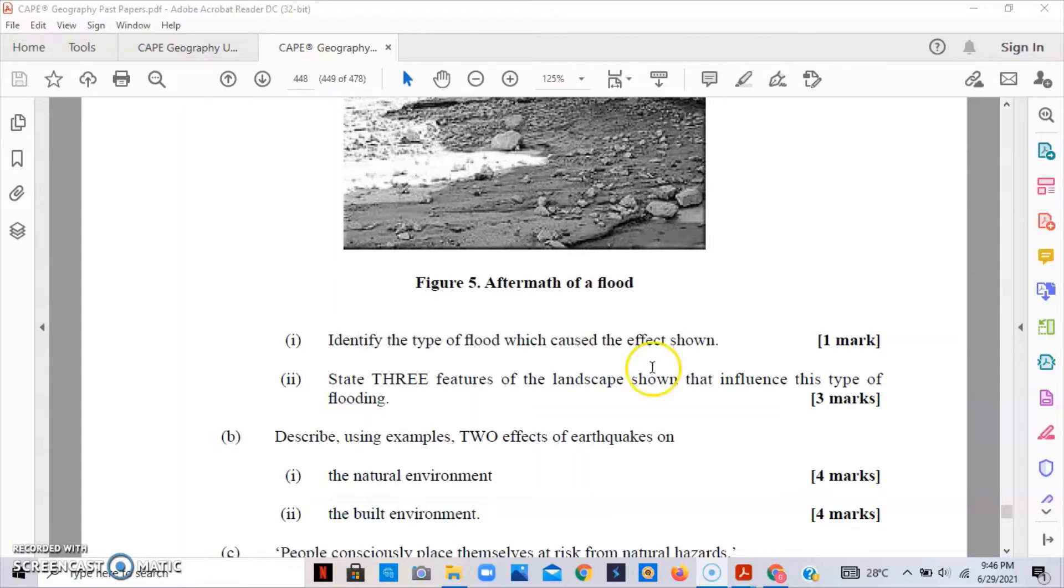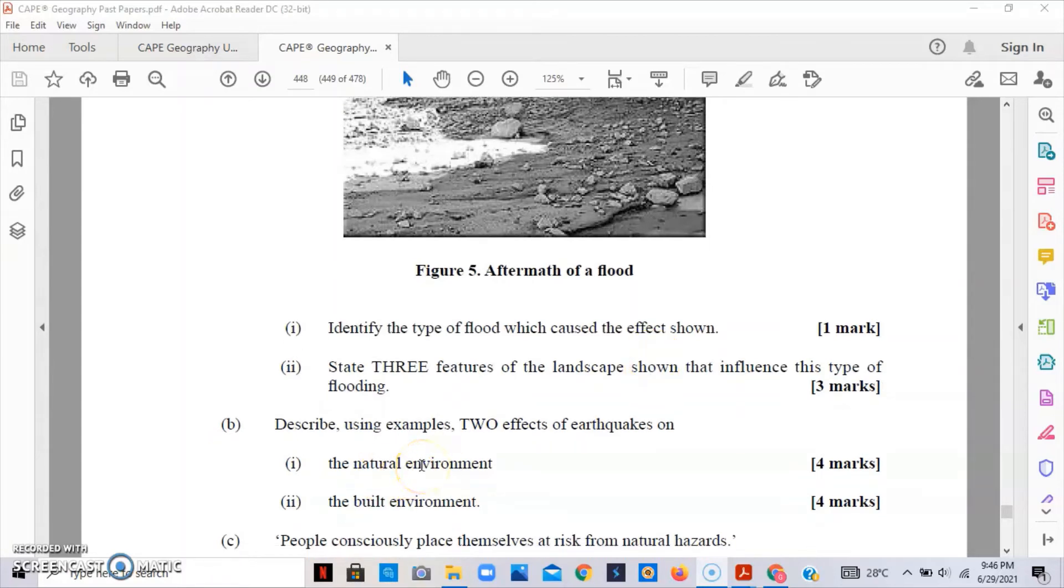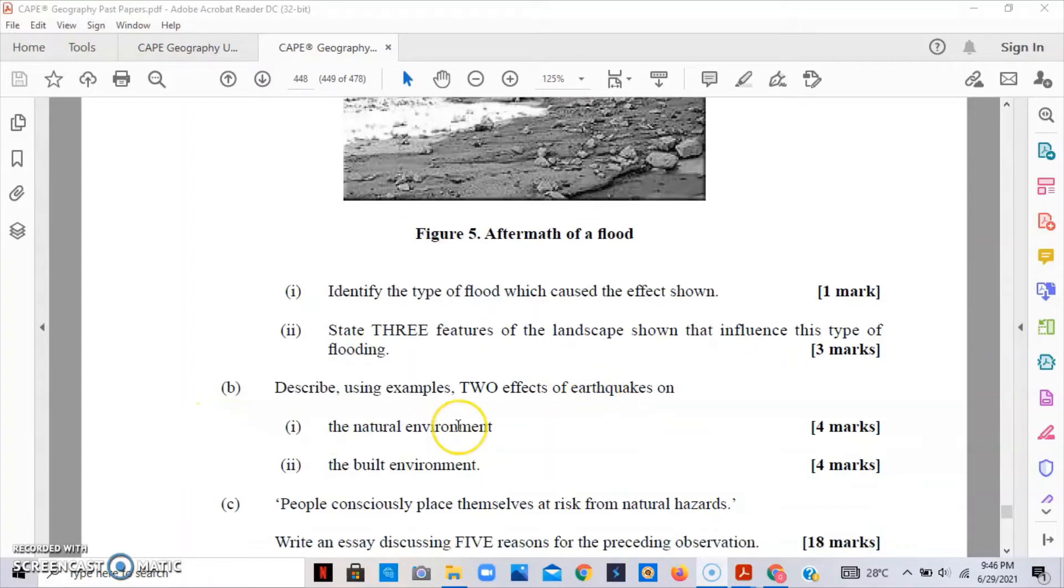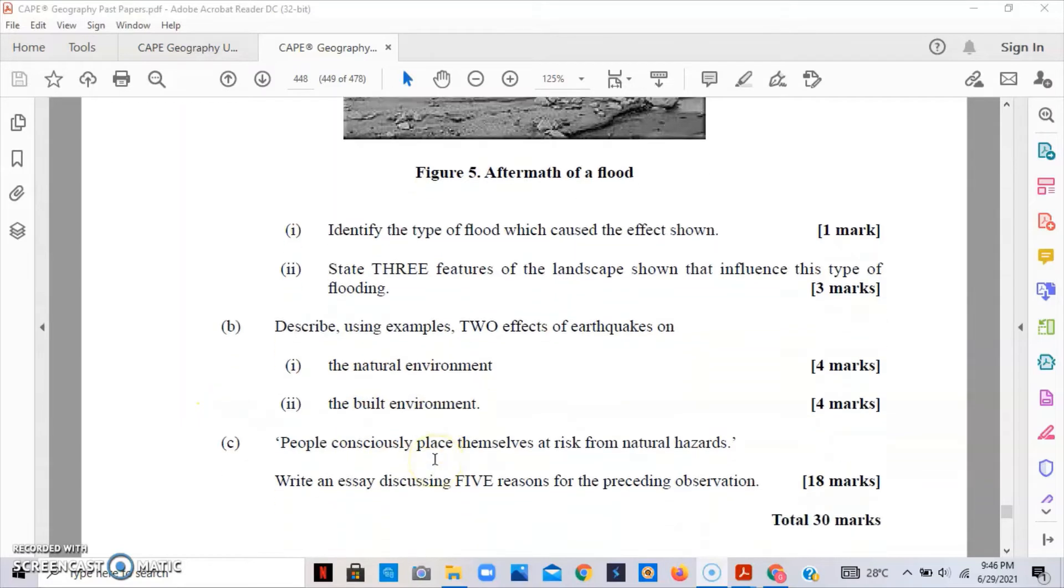Part b asks us to describe using examples two effects of earthquakes on the natural environment and the built environment. Two effects of earthquakes on the natural environment: it can cause liquefaction, landslides, faults, surface rupture, and tsunamis. Once you're able to describe two of these effects, you should be able to get the four marks.